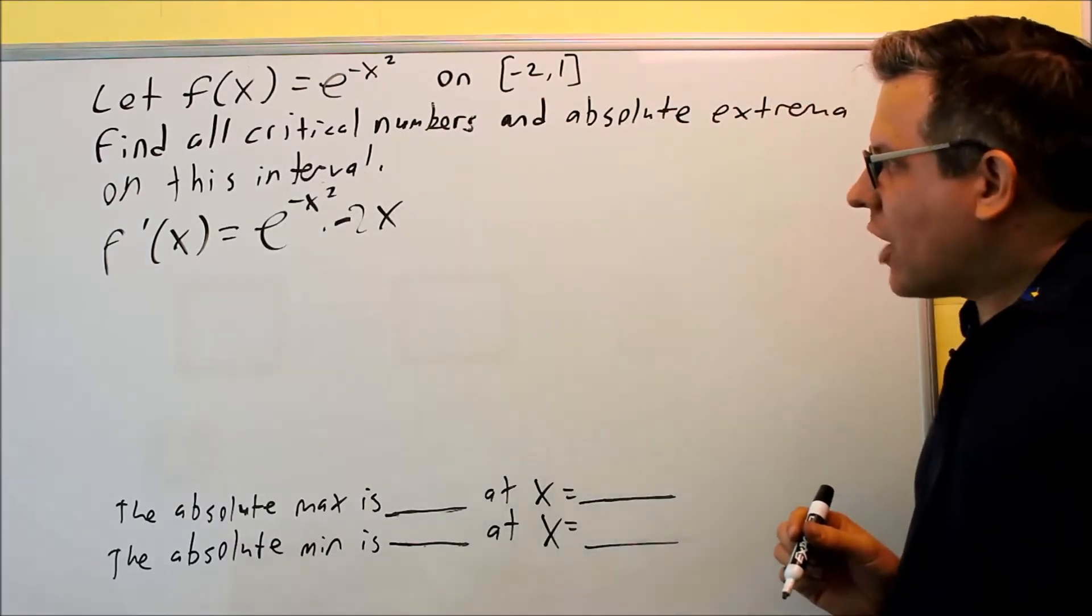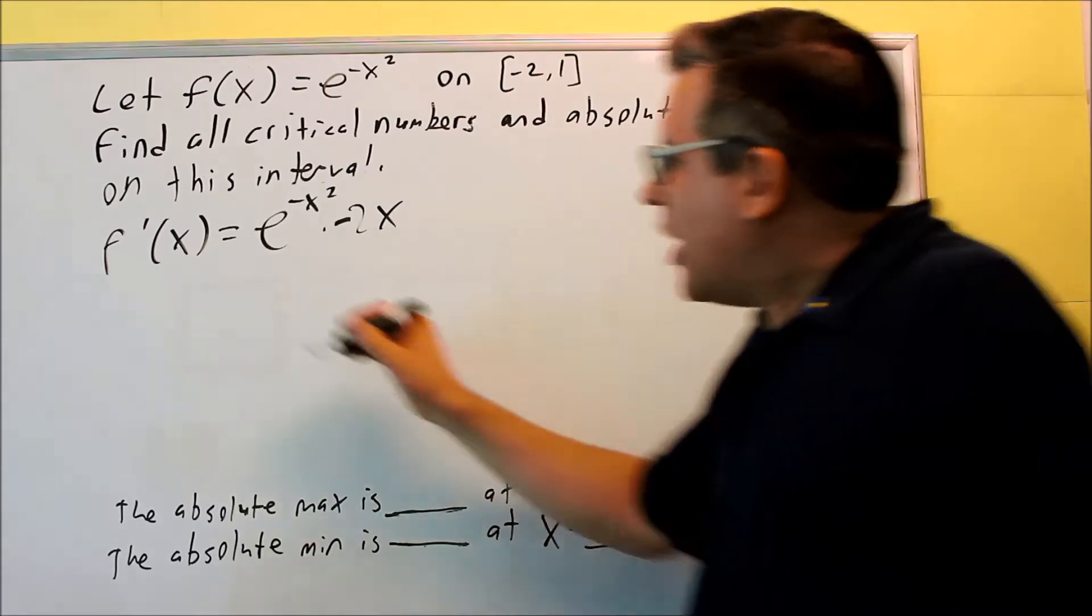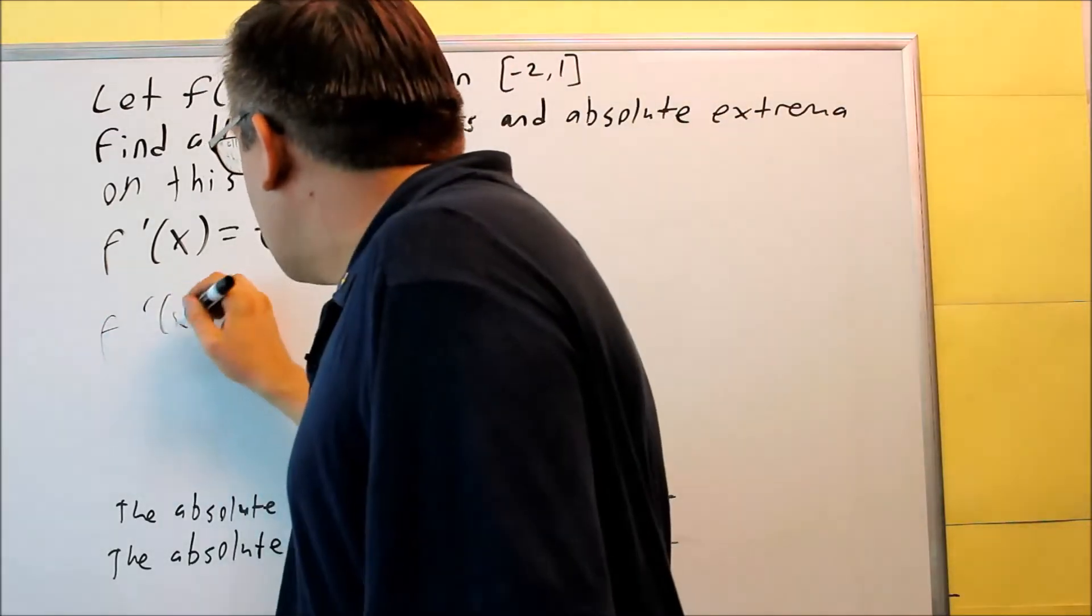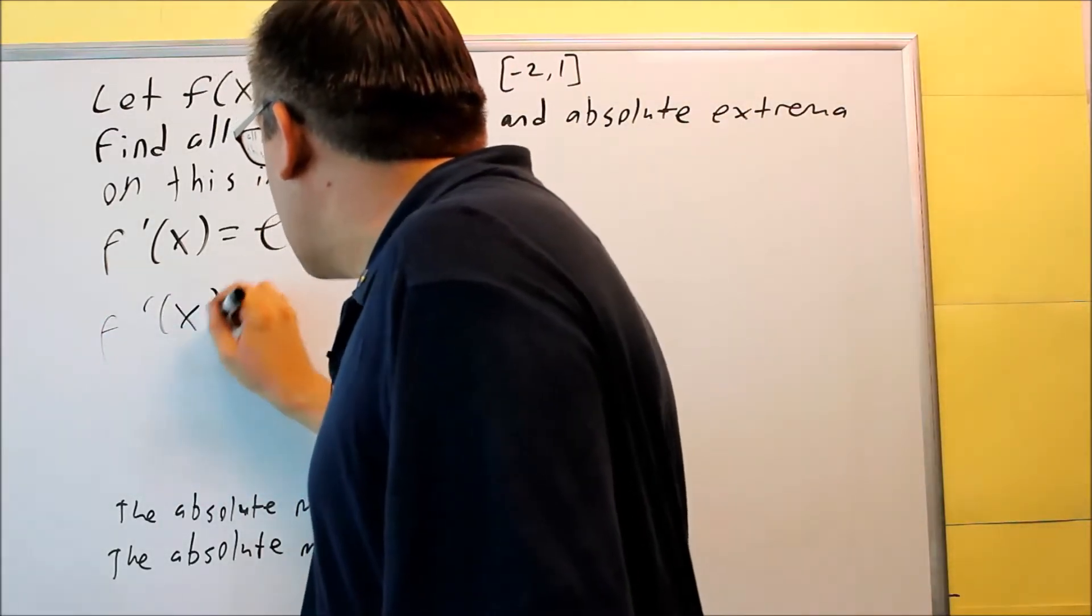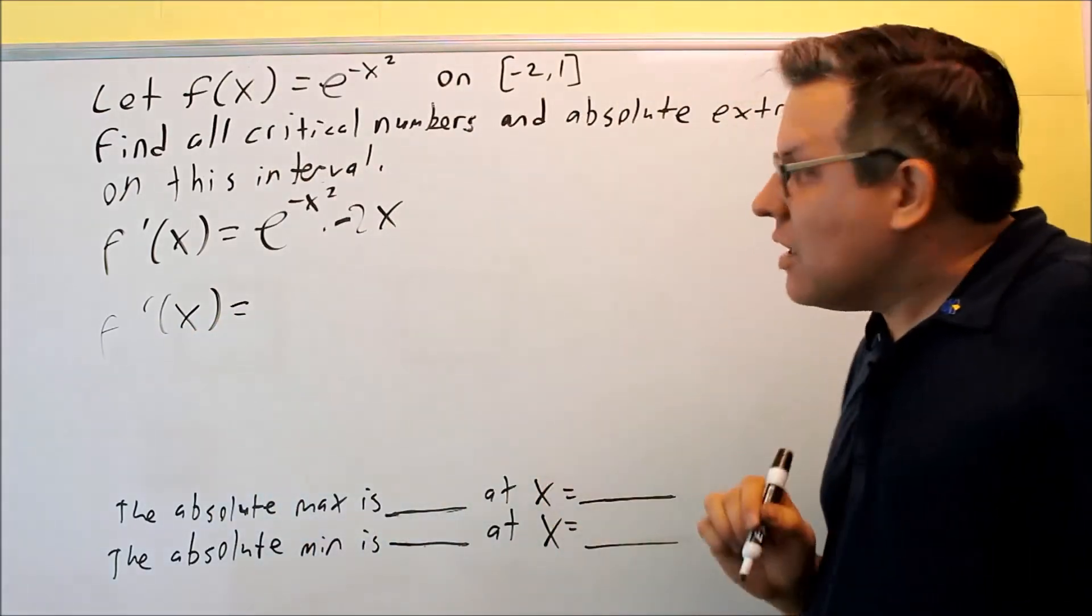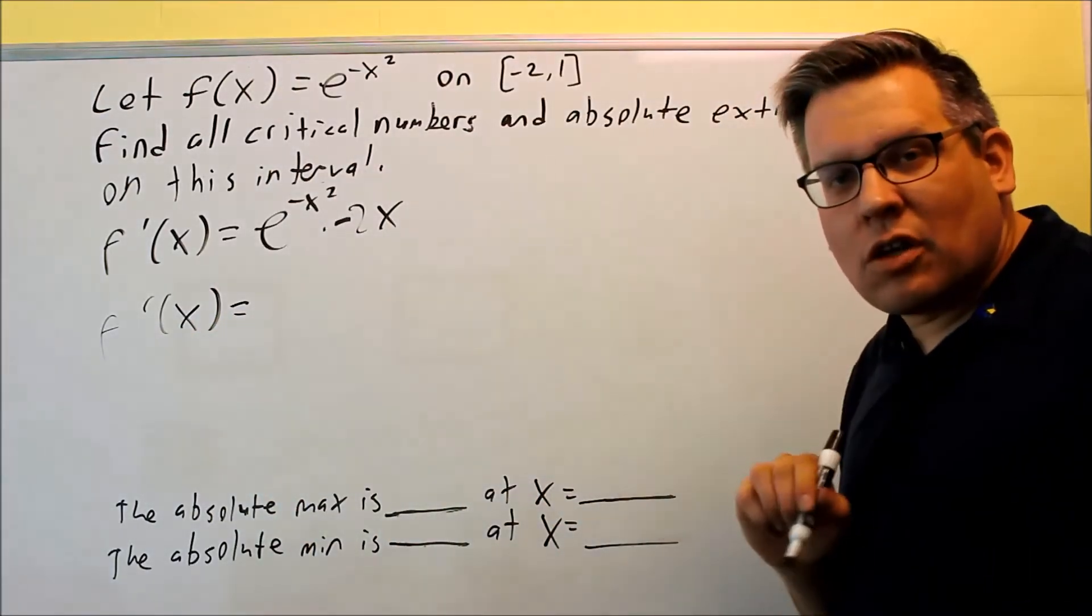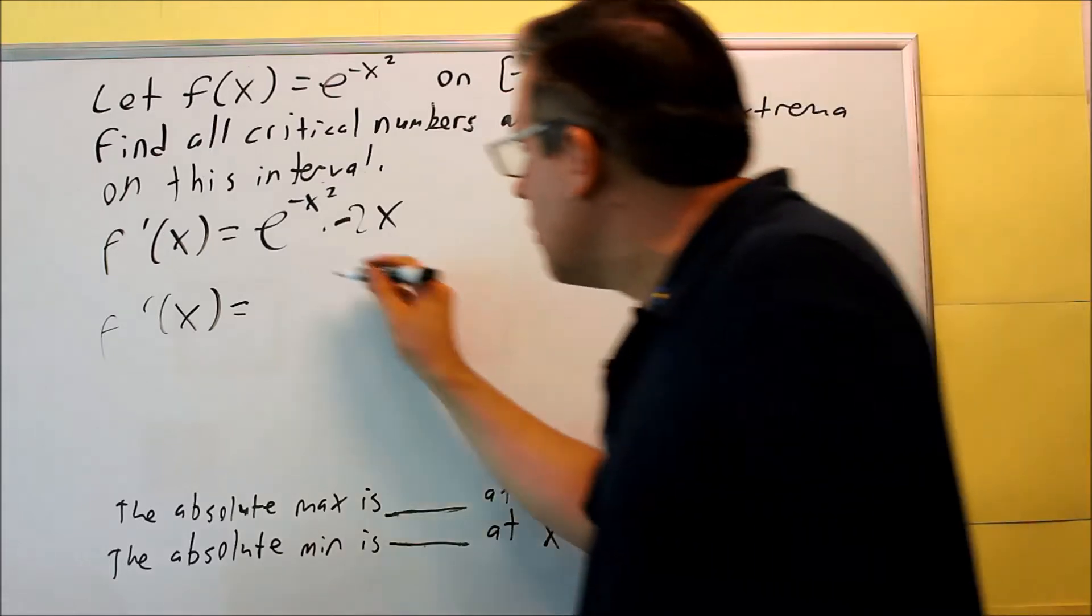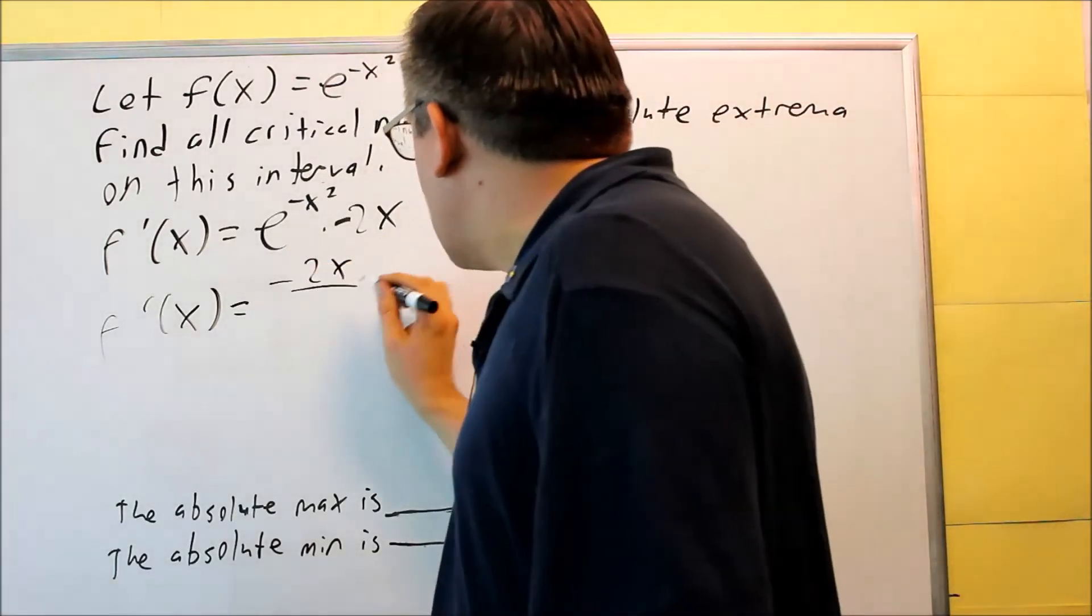So now I have to check to see if this derivative is undefined anywhere. Let's rewrite that. I'm going to write this as a fraction, so that's the easiest way to tell if you've got something undefined if you're dividing by a zero. So we're going to do negative 2x on top. On the bottom, I have e to the x squared.